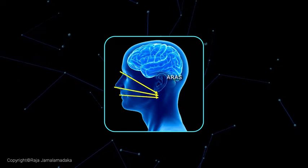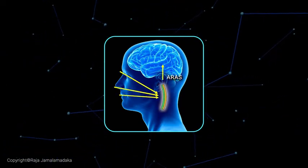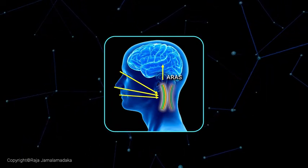When you receive inputs from the eyes, ears, and other sense organs, it is the ARAS that decides which inputs to send to the brain and which to filter out.